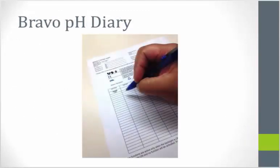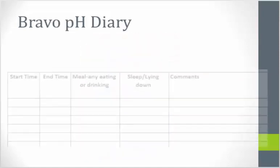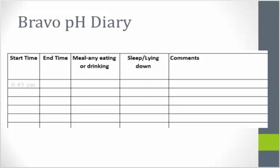Additionally, during the duration of your Bravo pH monitoring test, you will be asked to keep a Bravo Diary. On the Diary, you will manually record the start and stop times of meals, as well as the start and stop times when you lie down. The Diary helps ensure the accuracy of the test.